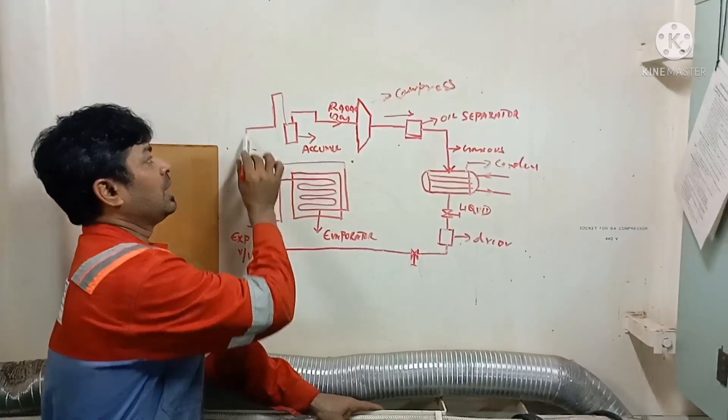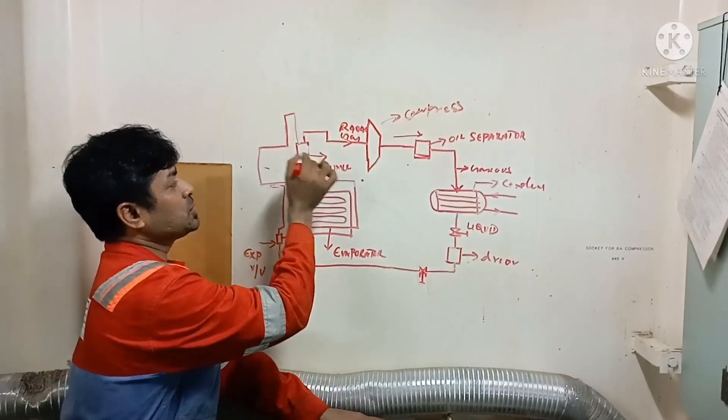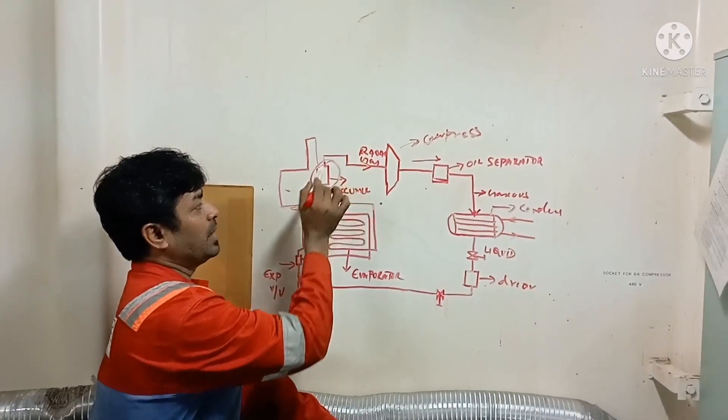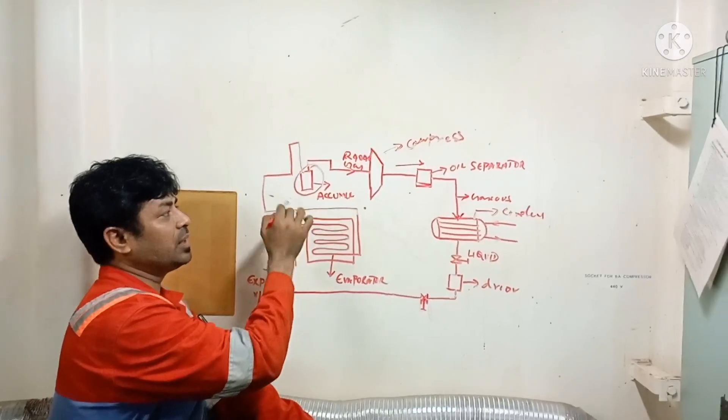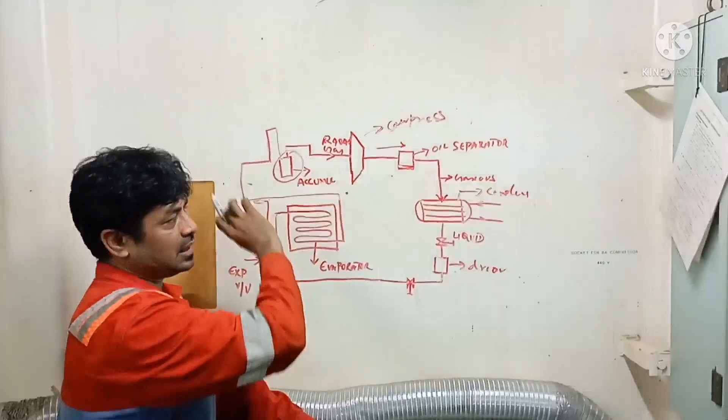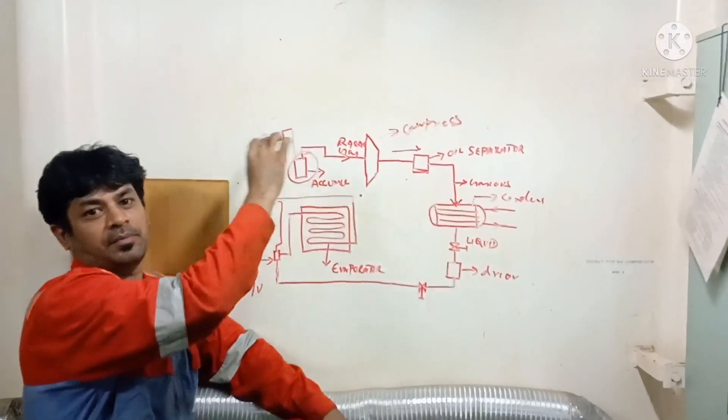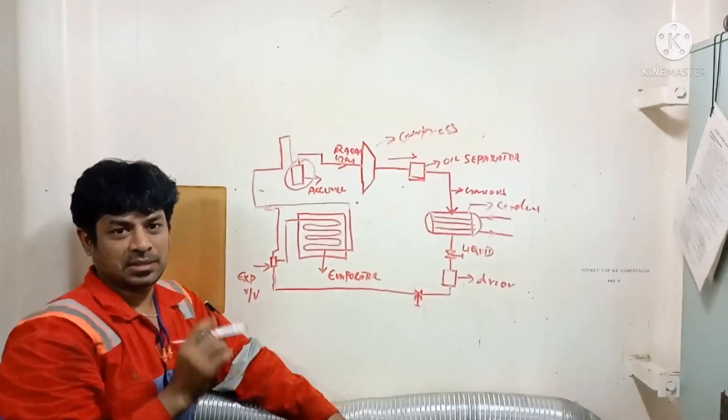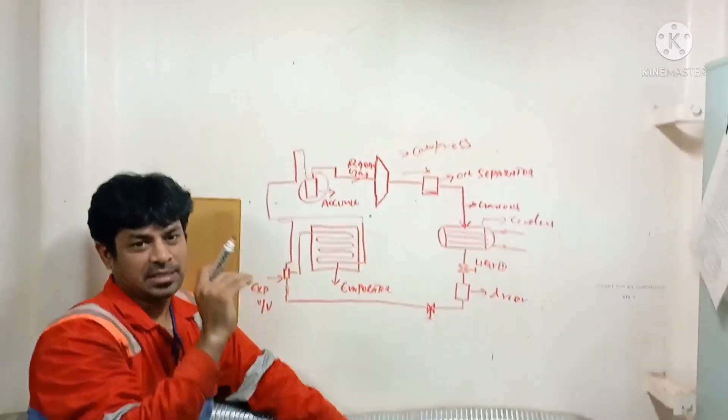From here, it goes out, and the vapor goes to your accumulator, or liquid separator. From here again, it goes to the compressor, and the circuit will keep on running unless your required temperature is achieved.